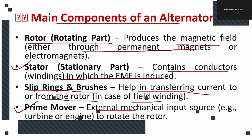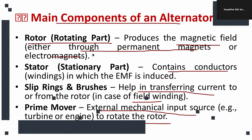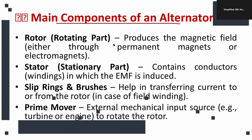The prime mover is an external mechanical input source, such as a turbine or engine, used to rotate the rotor. In order to rotate the rotor and reach synchronous speed, we require a prime mover. These are the four important components of the alternator: rotor, stator, slip rings and brushes, and prime mover.